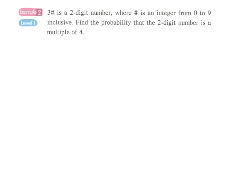We can simply write down all the two-digit numbers starting with 3: 30, 31, 32, 33, 34, 35, 36, 37, 38, 39. We have to find out how many of these two-digit numbers is a multiple of 4.